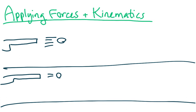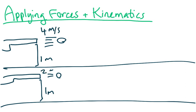These two finger-looking things are supposed to be guns, and they're supposed to be shooting out two bullets at the same time. They're at the same height — let's call this one meter, and this one meter as well. They are being shot horizontally at different speeds: let's call this four meters per second and this two meters per second. What I want to know is which one hits the ground first.